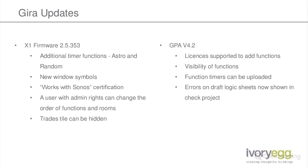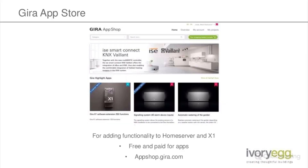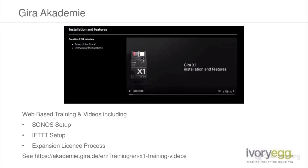Regarding timer functions in the app - if you go into functions in the app and go to timers, you'll have the sunset/sunrise options that we've normally had in GPA. It's pretty straightforward so it should be easy to work out.